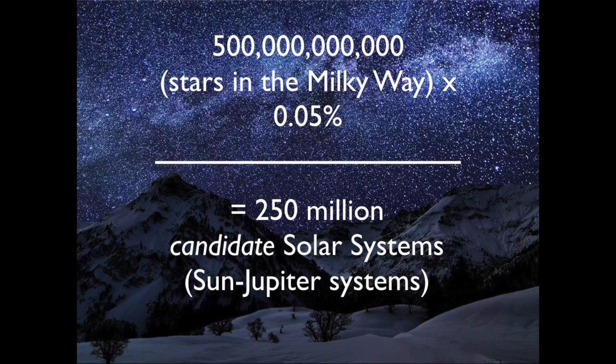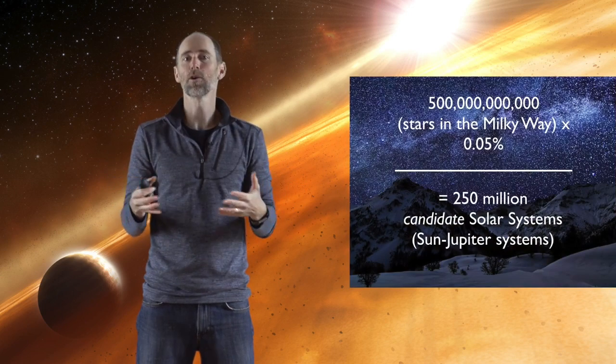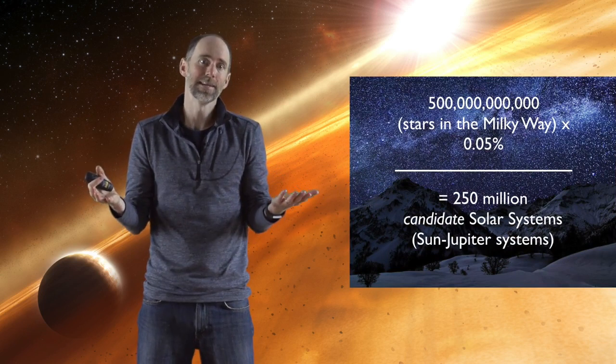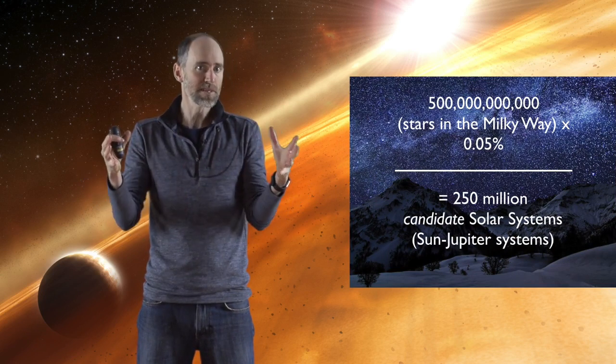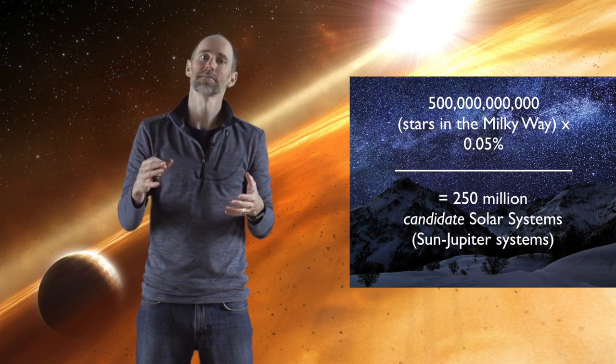Within the galaxy, there are about 500 billion stars, giving us several hundred million candidate solar systems. But remember, these are just candidate Sun-Jupiter systems. There are many other characteristics that represent the real solar system, like the orbits of the other planets. When we take the whole solar system as a whole, it can only be less likely than this.